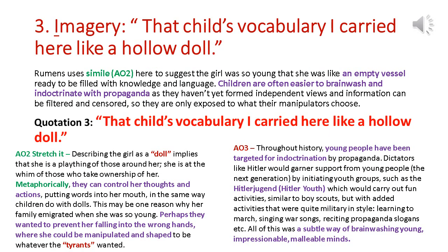Moving on to the imagery in the poem, one of the best quotations to look at is the simile 'that child's vocabulary I carried here like a hollow doll.' Rumens is using simile to suggest that the girl was so young when she emigrated that she was like an empty vessel — something hollow that was ready to be filled with knowledge and language.